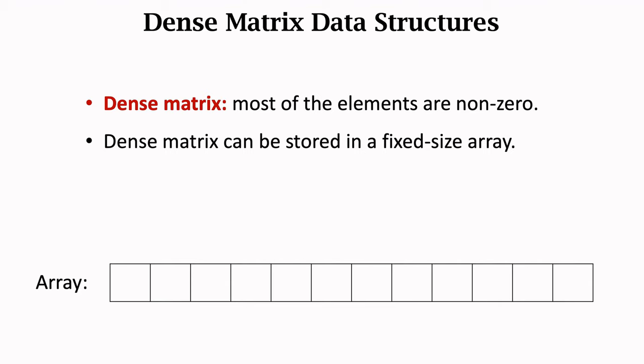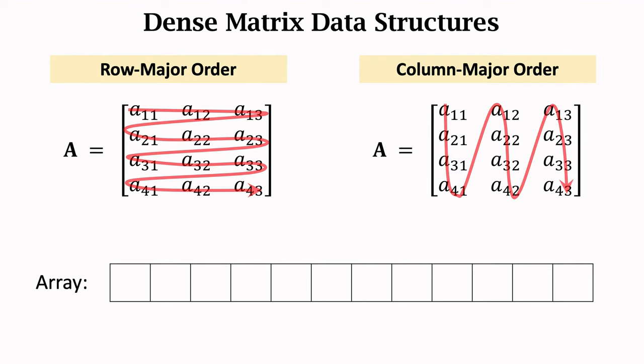We can store a dense matrix in two different ways. One is row-major order, and the other is column-major order. Here I illustrate row-major order and column-major order. The left is row-major order. It means storing the rows one by one in the array. The first row, then the second row, the third row, and so on. The right is column-major order. It means storing the columns one by one.